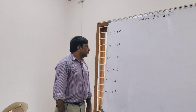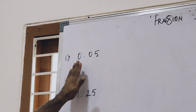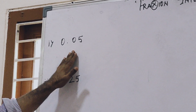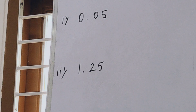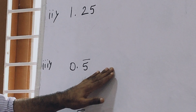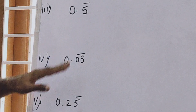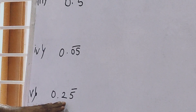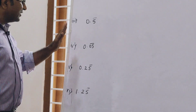Just see on the board. We have 0.05, and we have to change this decimal number into a fraction. Also 1.25, and 0.5 bar — meaning 5 is repeated any number of times, that is 0.555 and so on. Similarly, 0.05 bar means both digits have a bar. Here 0.25 bar means only 5 has a bar. Here 1.25 bar means only 5 has a bar. So there are 6 questions.